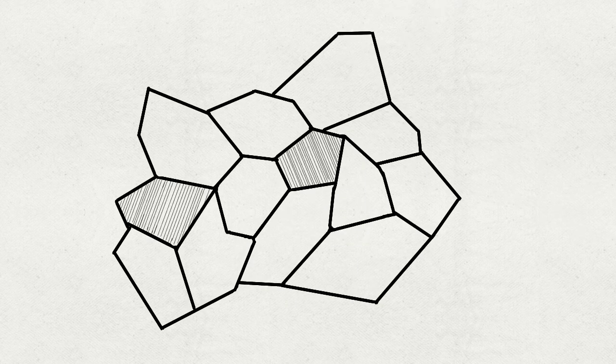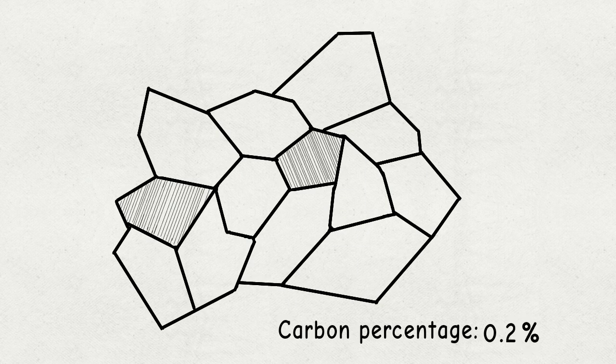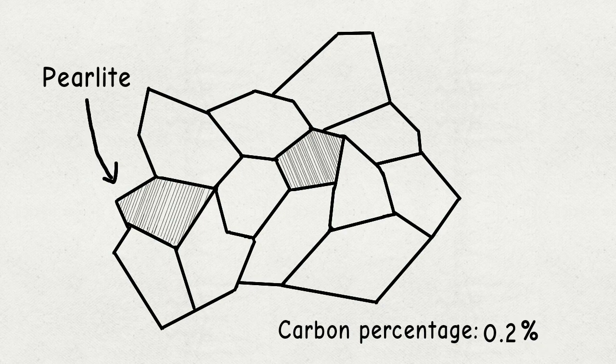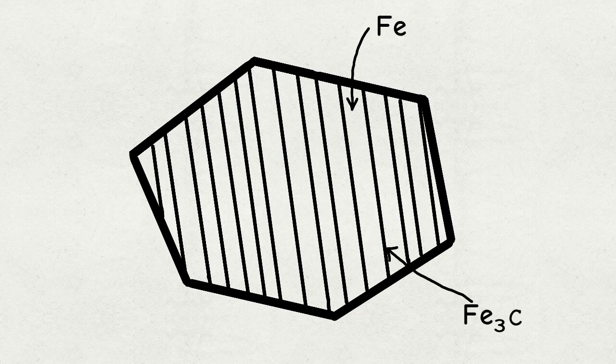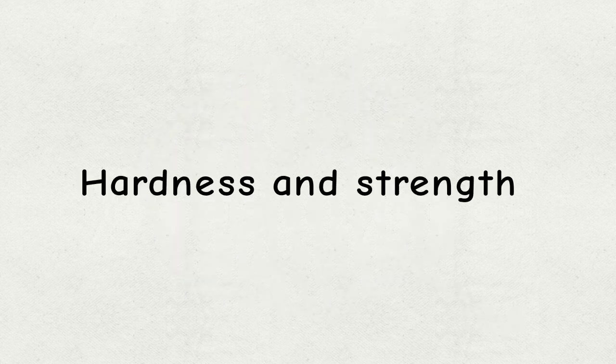And this is a piece of steel with a carbon percentage of 0.2%. Steel differs from iron as it contains perlite crystals. Perlite crystals are composed of veins of iron and iron carbide, which are very hard and strong.